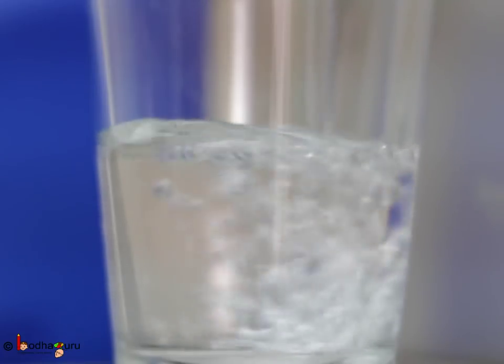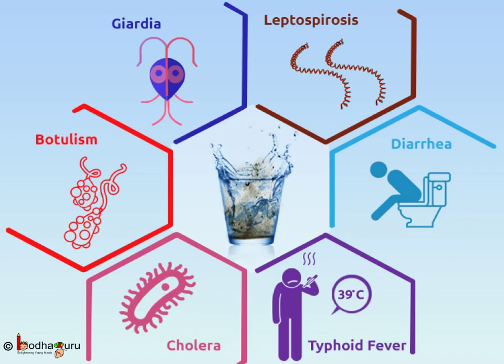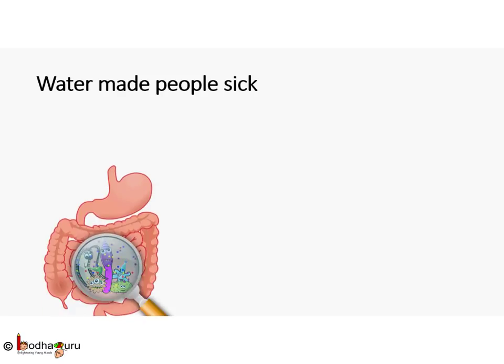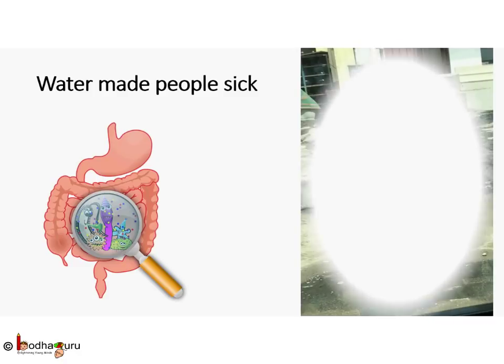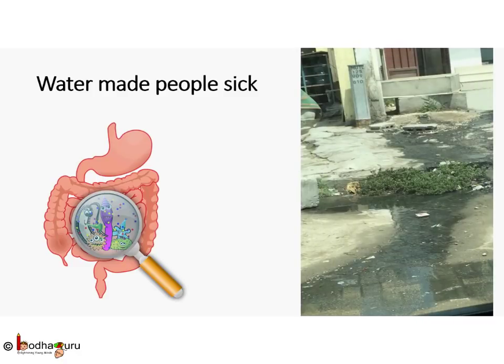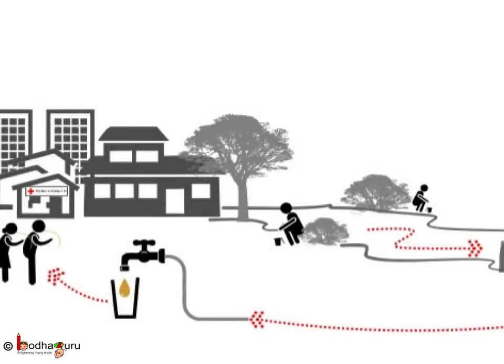Water is life — we cannot survive one day without water, but water kills more than 15 lakh people every year. Suppose a gutter pipe got a crack and sewage water leaked into a drinking water pipe. Hundreds of people drank that polluted water. Diseases which are caused by or spread through polluted water are called waterborne diseases.